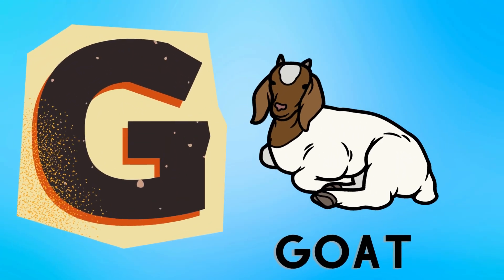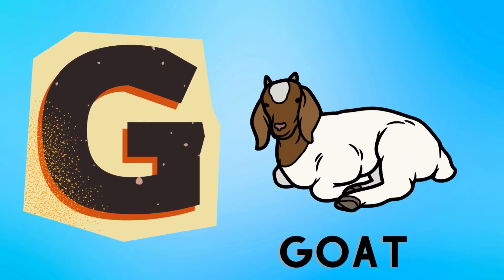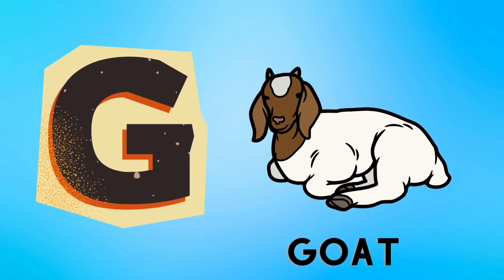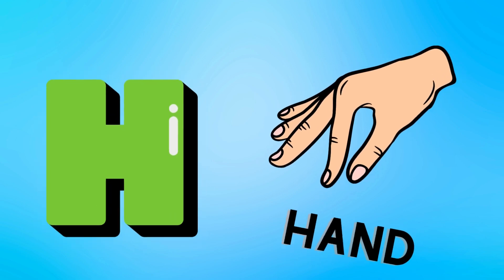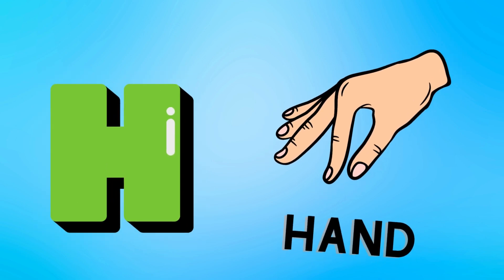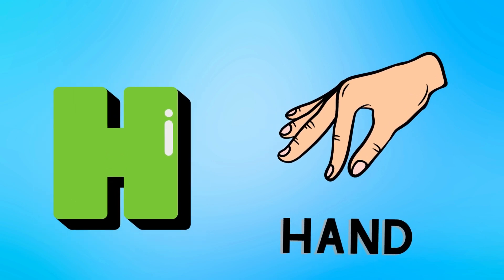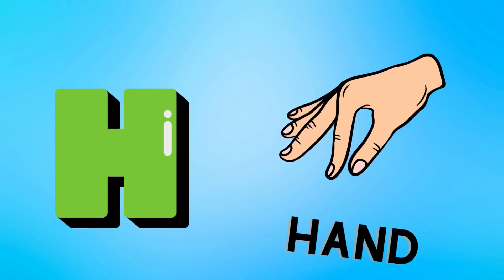G is for goat, g-g-goat. H is for hand, a-a-hand.